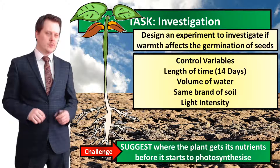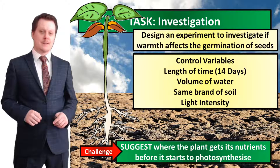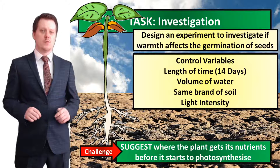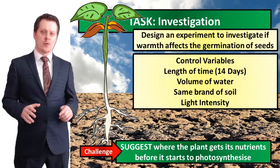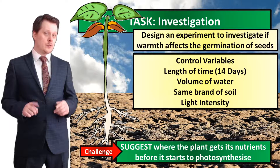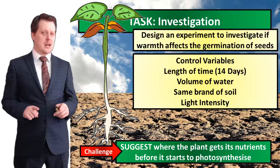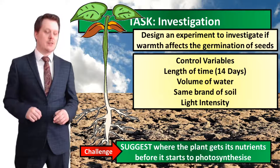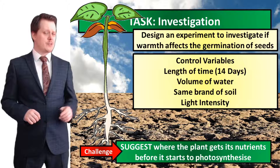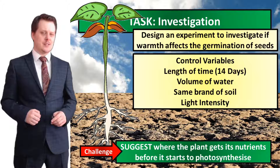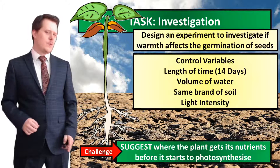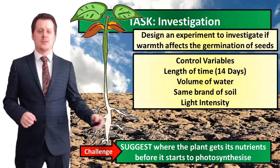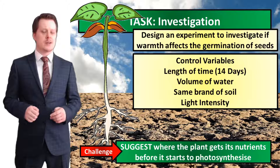For our control variables — the things we keep the same — we measure the length of shoots after 14 days. Each seed must receive the same volume of water. We should use the same brand of soil or compost to ensure the same amount of nutrients, and keep light intensity the same. If half the experiment is in the fridge, you'll probably need a battery-powered light to allow photosynthesis. You could put the room-temperature group in a dark room and use the same light intensity for both. Before plants can photosynthesize, they get all their nutrients from the food store in the seed.